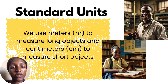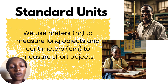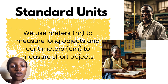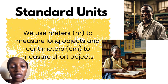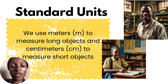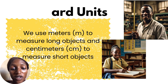As you can see, the man is making use of a longer measuring stick to measure long objects. We use centimeter — if you take your ruler now, you'll see that cm is written on it — to measure short objects. As you can see, the lady looking at you and smiling is making use of a ruler.